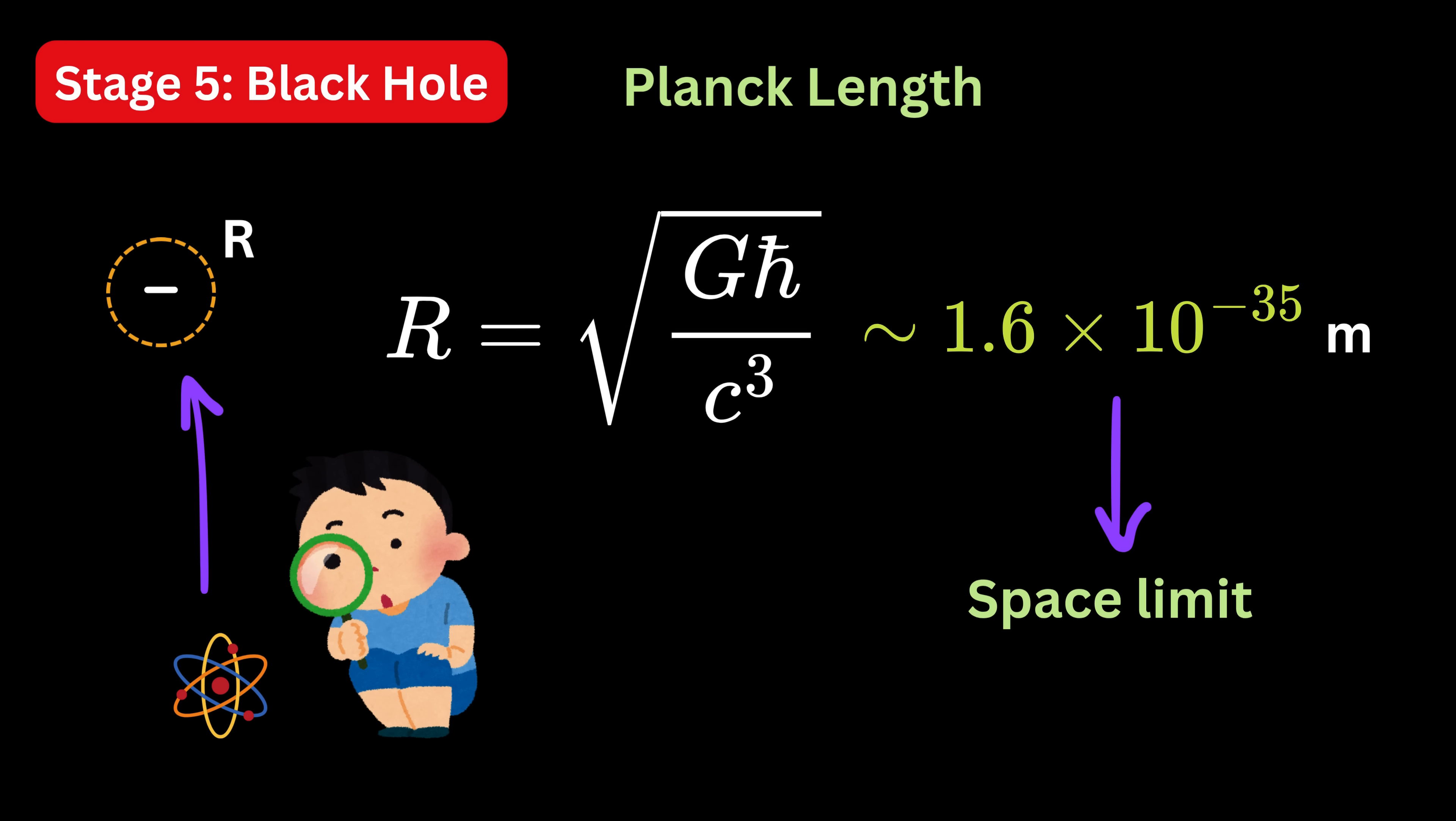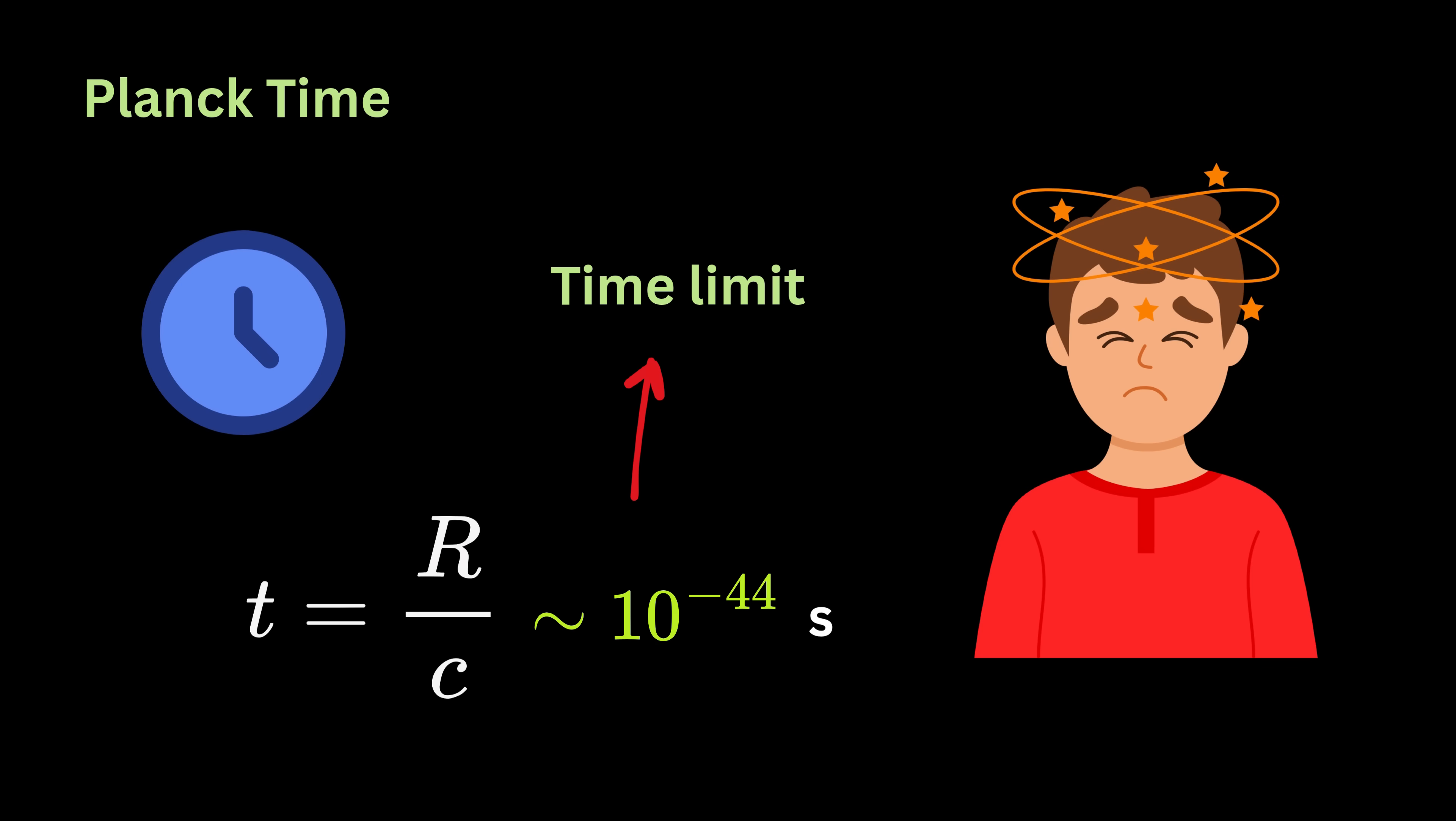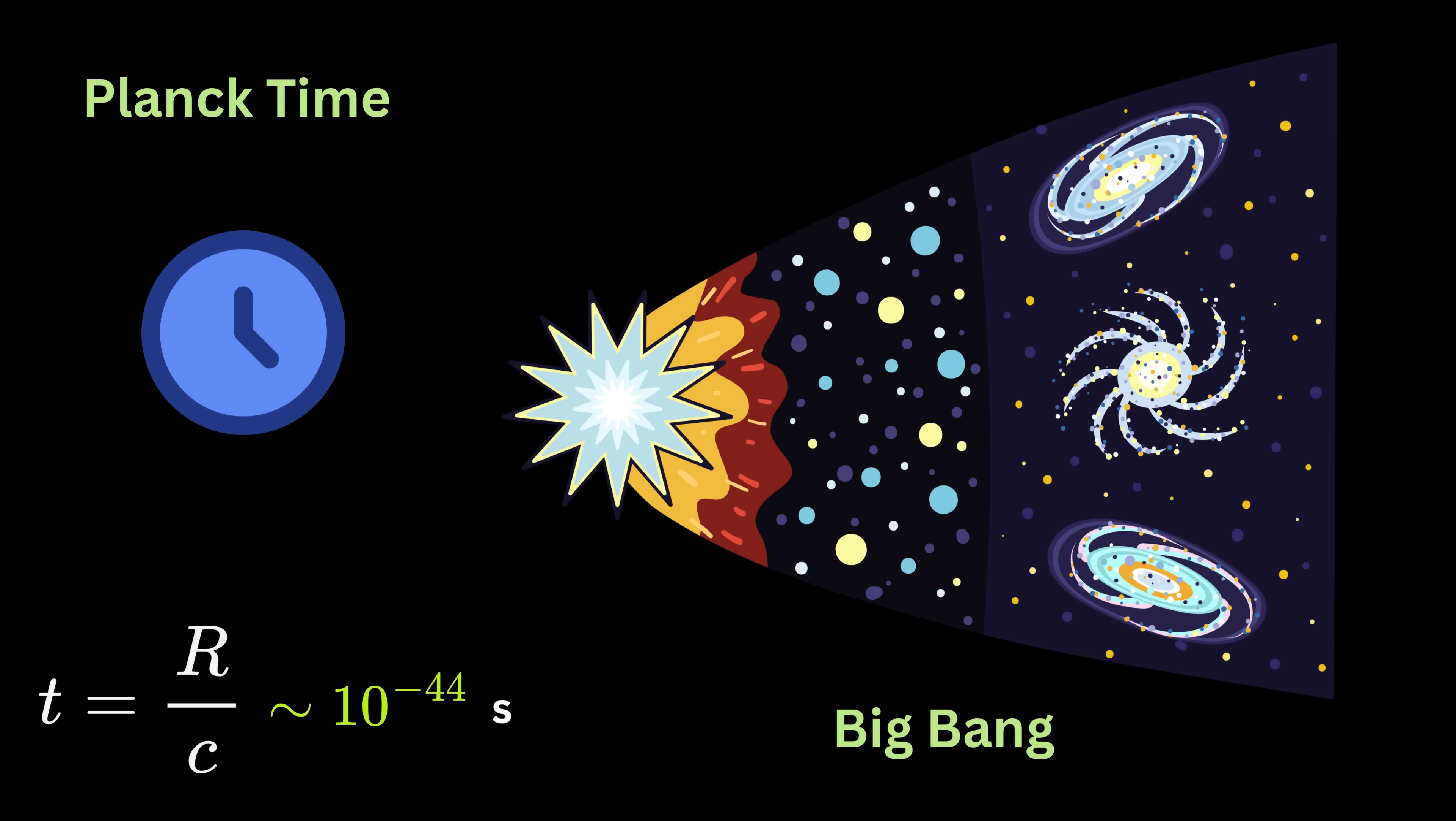The Planck length is only one piece of the puzzle. Alongside it, we get other Planck units, like Planck mass and Planck time. Planck time is the time light takes to travel one Planck length. That's the Planck length divided by c. It works out to about 10 raised to minus 44 seconds. That's the shortest meaningful time interval in physics. Below this, even time itself may not make sense. And that's why we say the very beginning of the universe, the Big Bang, starts after Planck time. Before that, our current physics simply cannot describe what was happening.